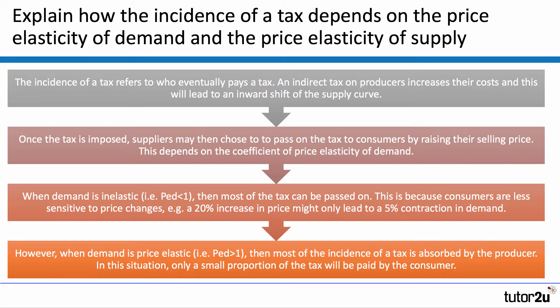The incidence of a tax refers to who eventually pays a tax — let the examiner know what you mean by the term. An indirect tax on producers, for example the carbon tax in Singapore, increases their costs. This will lead to an inward shift of the supply curve. 'This will lead to' is a connective phrase which helps to build the chain of reasoning.